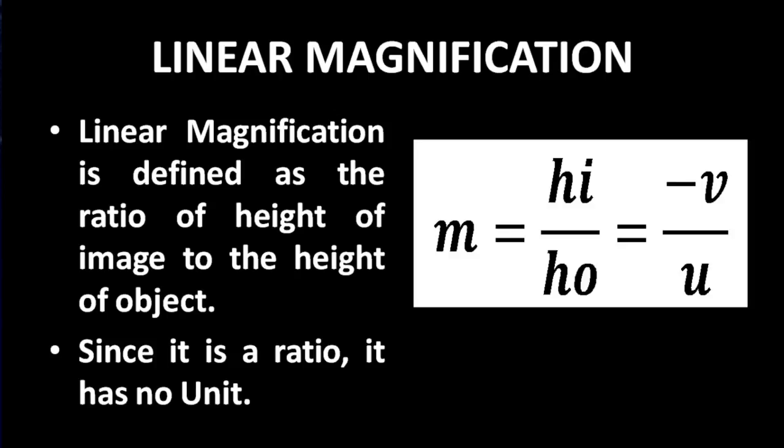Linear magnification is a ratio, hence it has no unit. Remember, linear magnification is only the comparison of height of image to the height of object. No other aspect — that is, the area or volume — is considered in linear magnification.